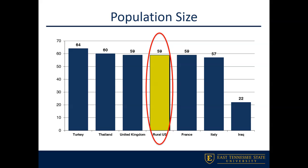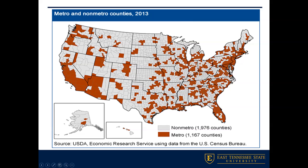Looking at what our rural population looks like overall: if we compare it to other countries, we have about 59 million people who live in areas deemed rural here in the United States. That's about the same population as the United Kingdom, France, or Thailand — a significant number. For the last census in 2010, about 80% of the US population was considered urban and the remaining almost 20% was considered rural.